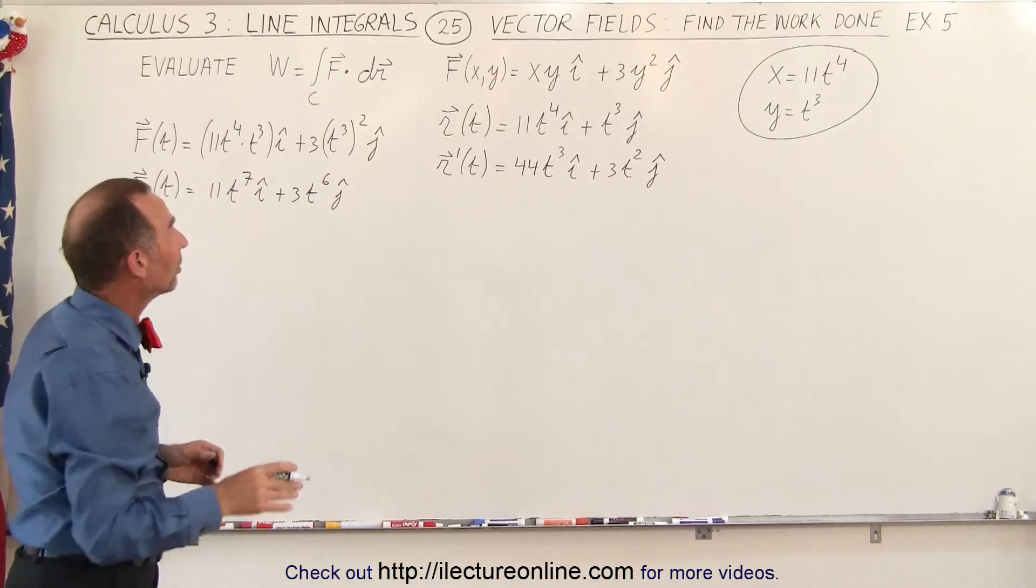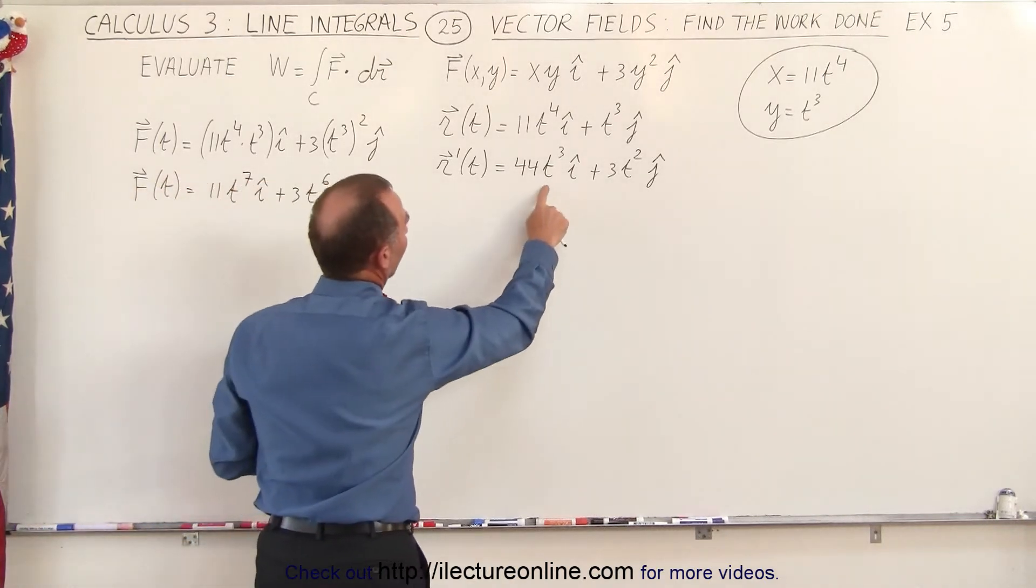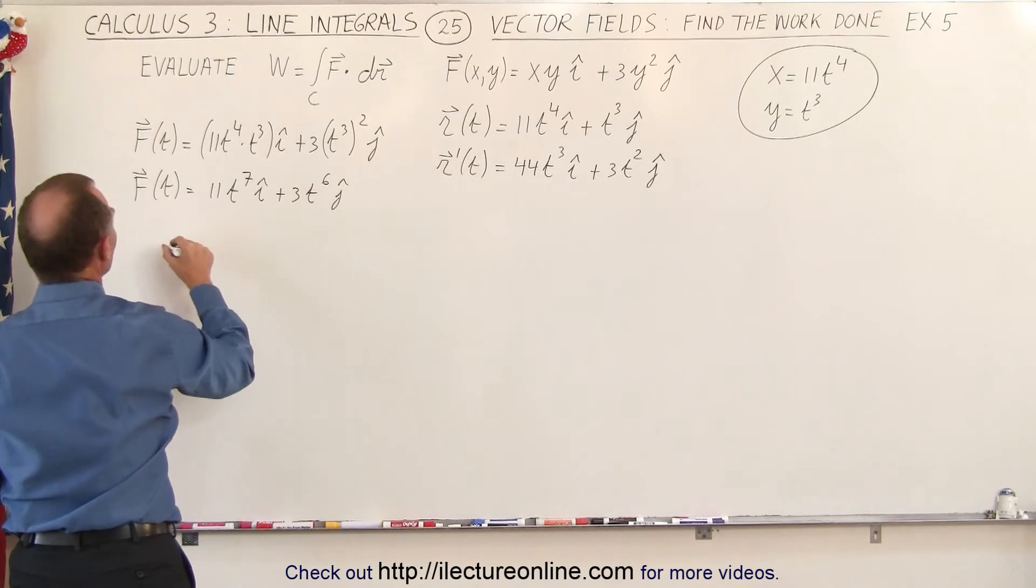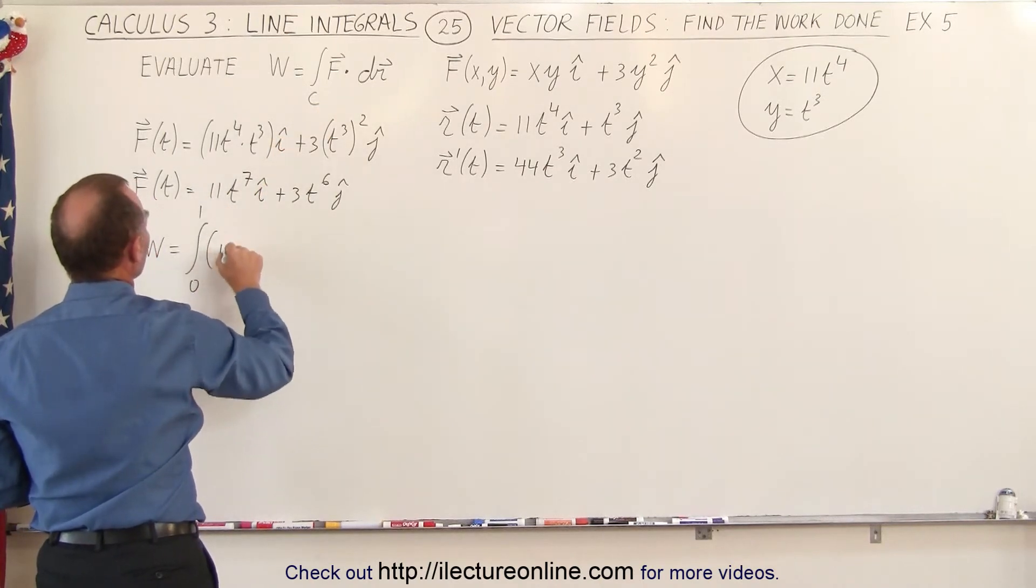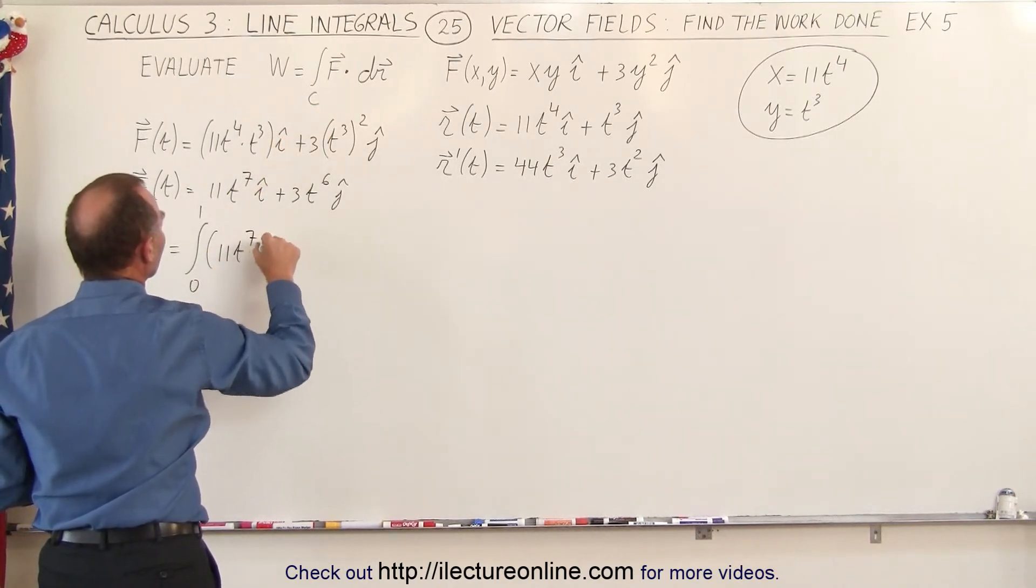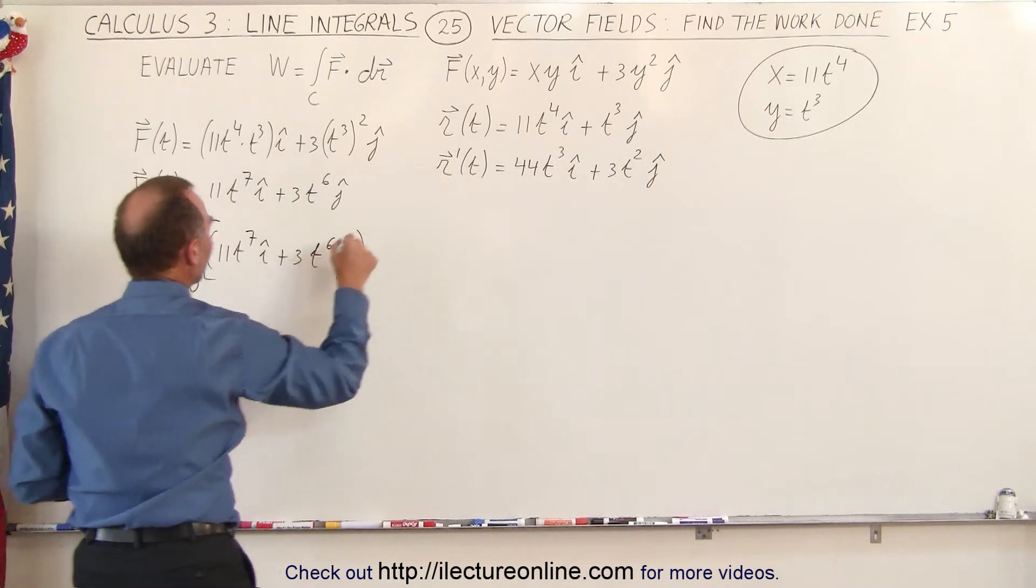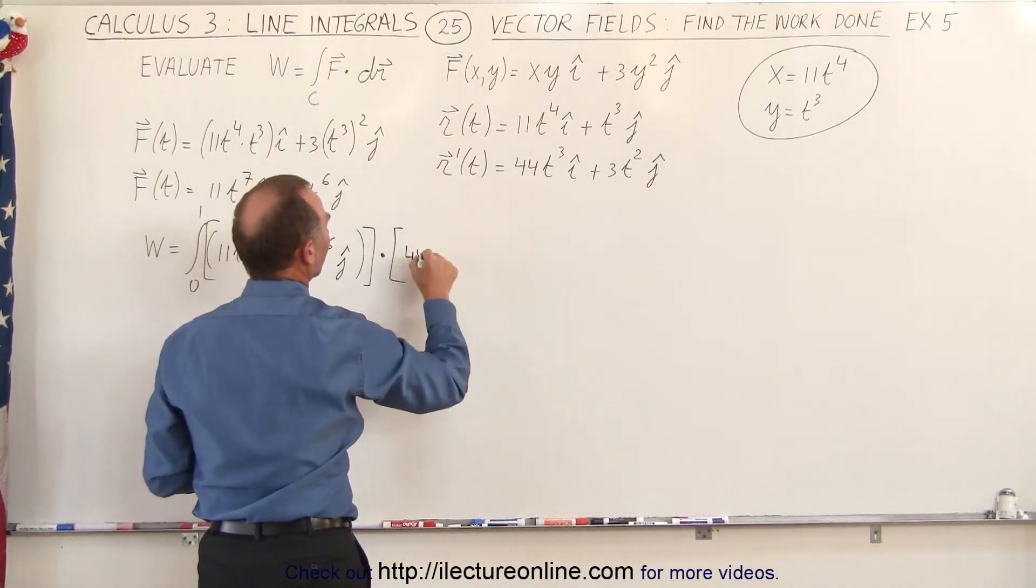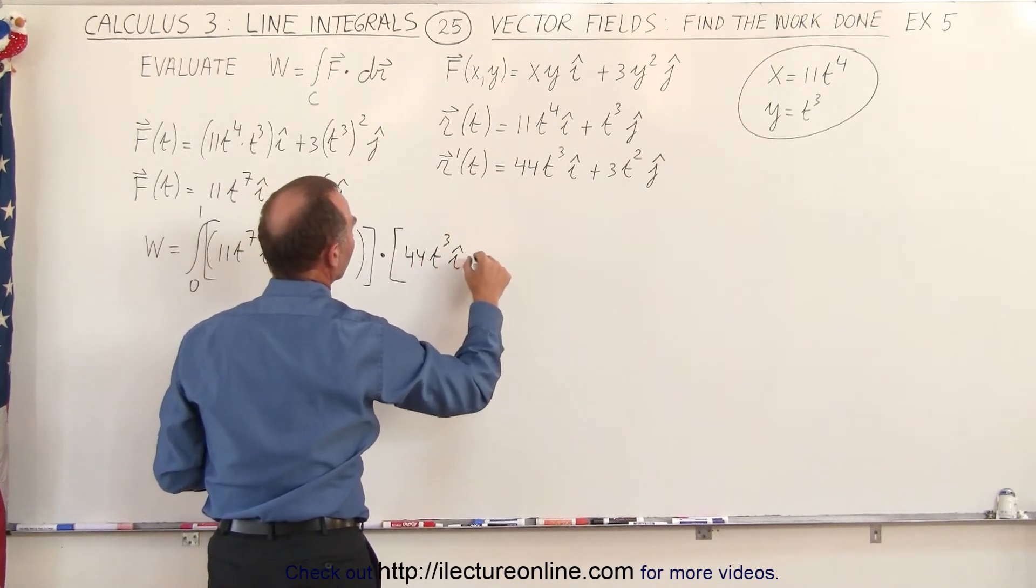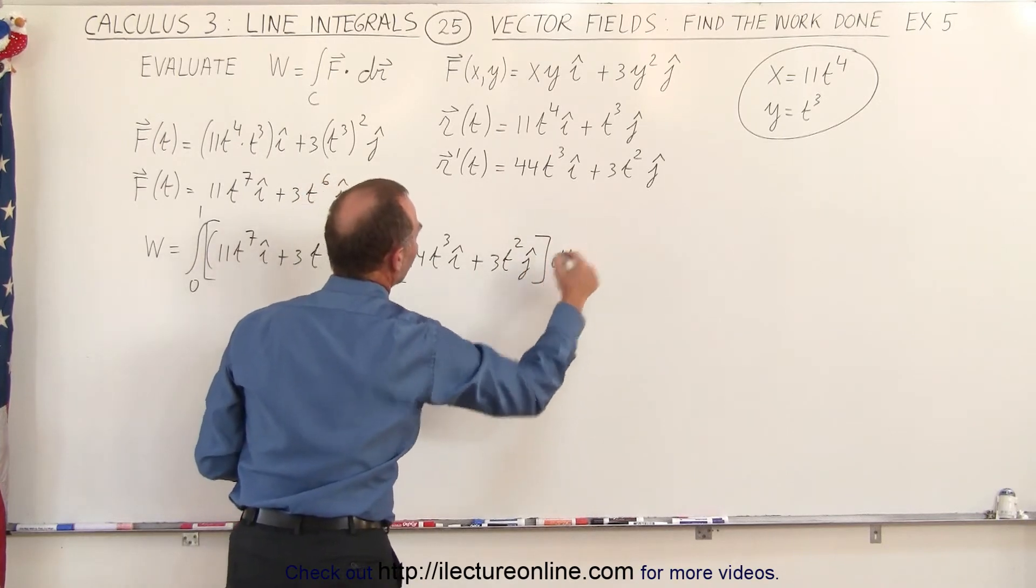And now we're ready to find the work done by moving from point A to point B, as defined by the parameterized variable t. We can then say that the work done is equal to the integral from 0 to 1 of the vector field f, which is right here, 11t to the 7th in the i direction, plus 3t to the 6th in the j direction, multiplied via the dot product with the derivative of the position vector, which is 44t cubed in the i direction, plus 3t squared in the j direction, times dt, of course.